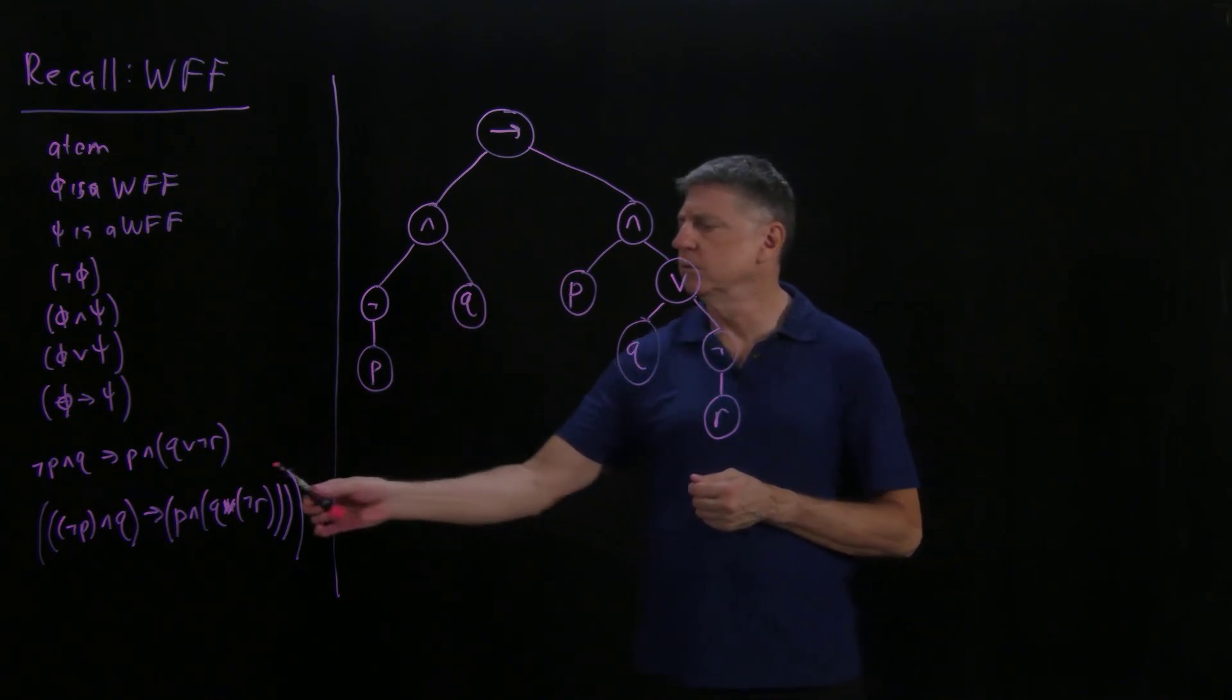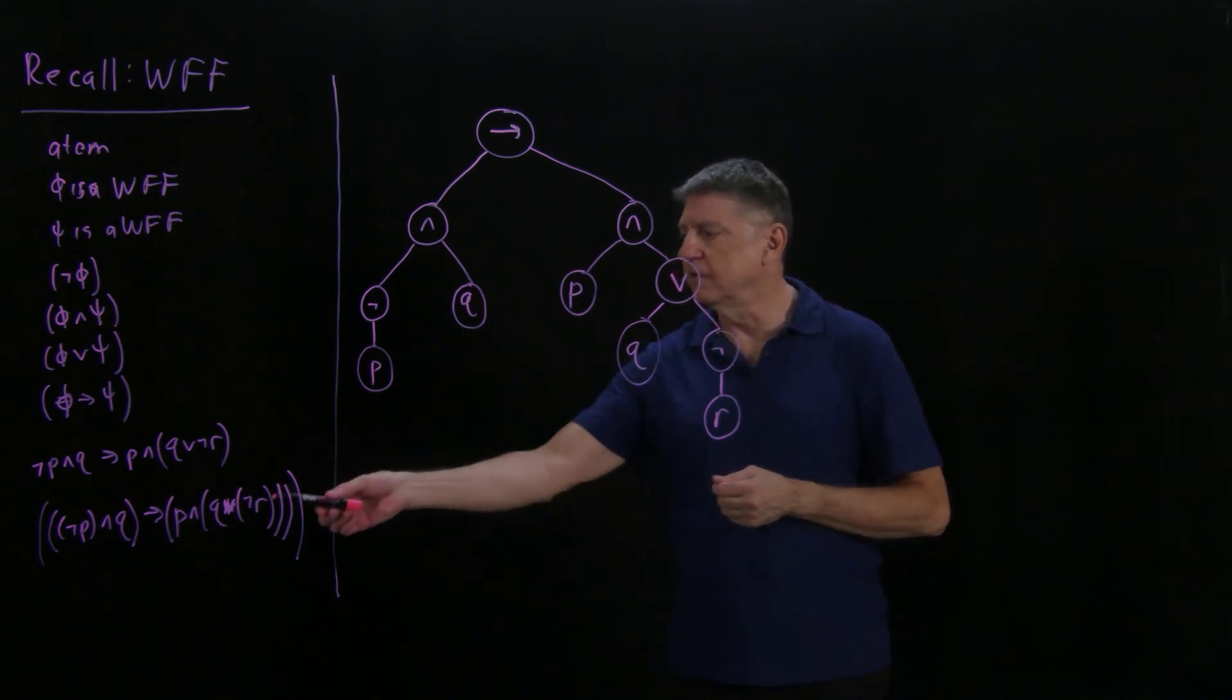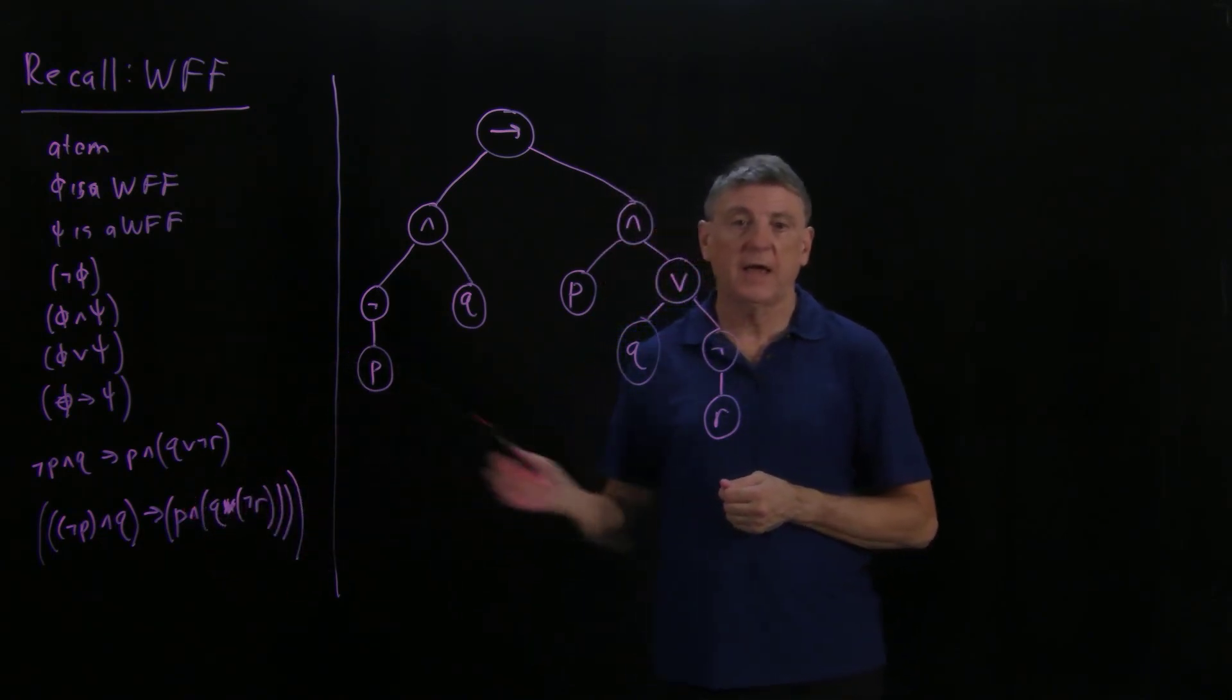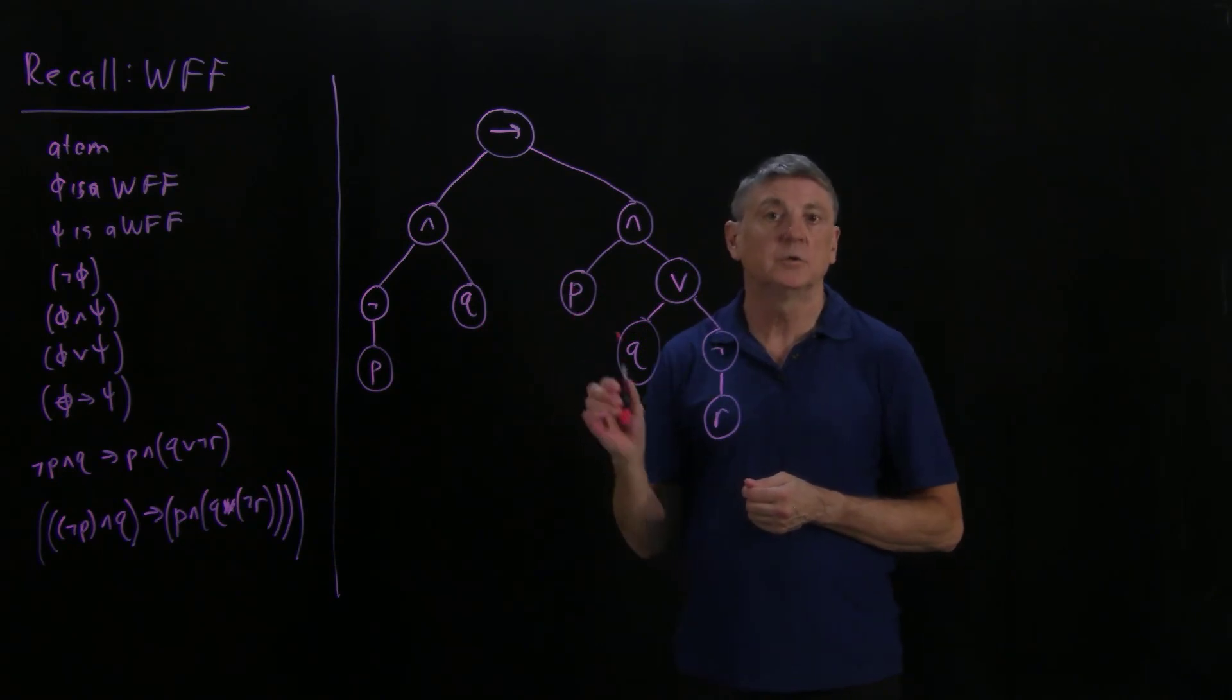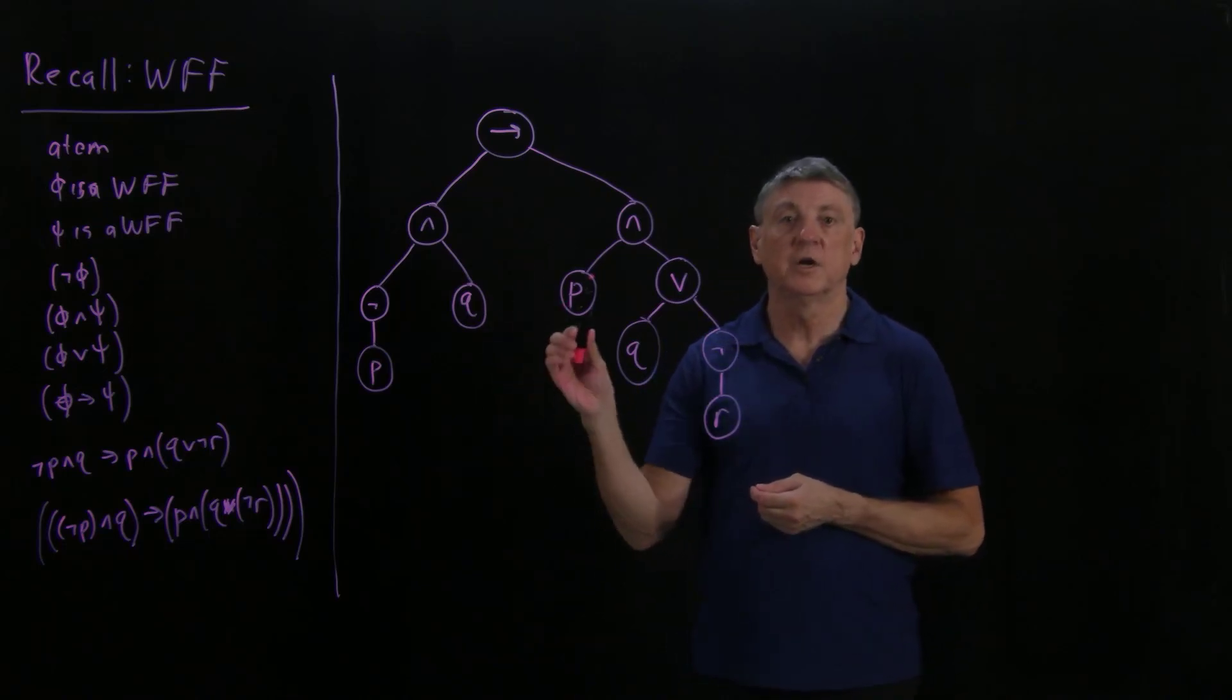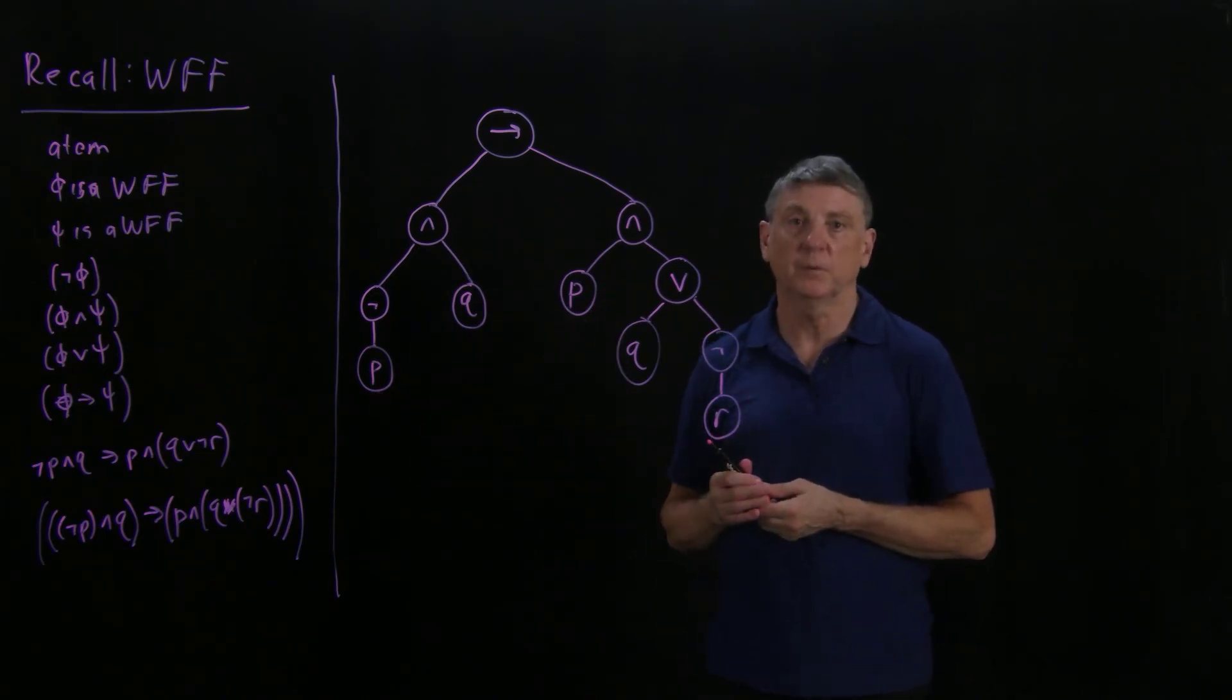There are other ways to develop the parse tree. There are some strict ways involving going from the atoms upward. And all of this relates, eventually, to computer science. Because in computer science, a language is parsed, and this parsing of a computer language corresponds exactly to the kind of parsing that we have to do for a well-formed formula.